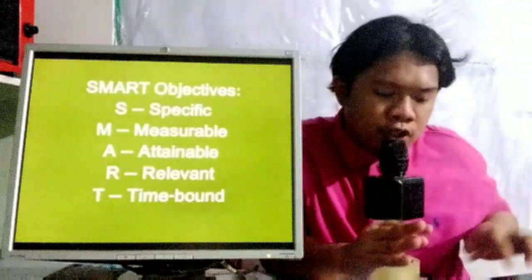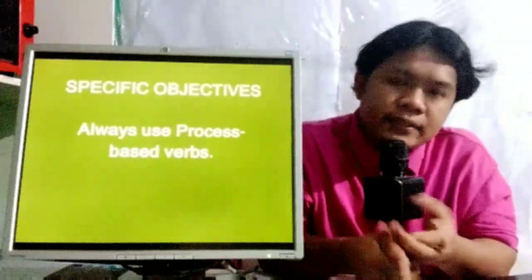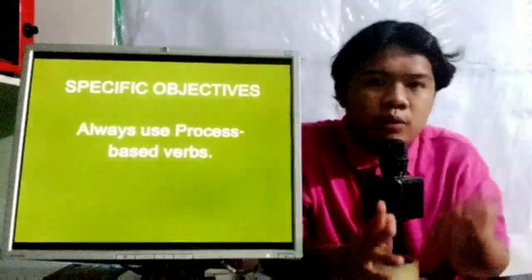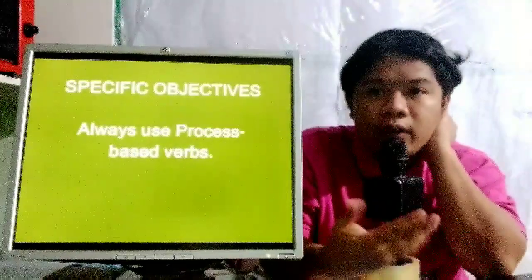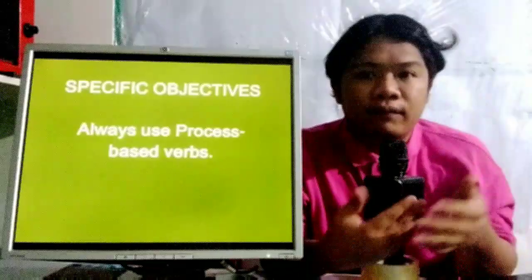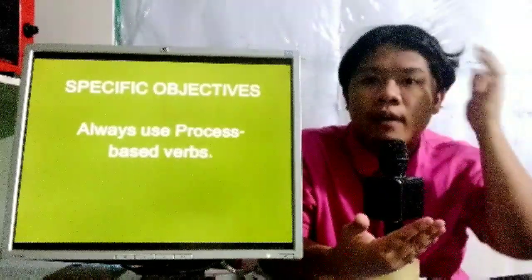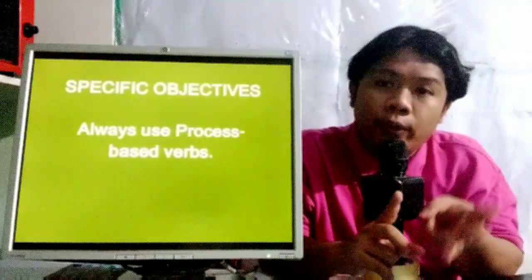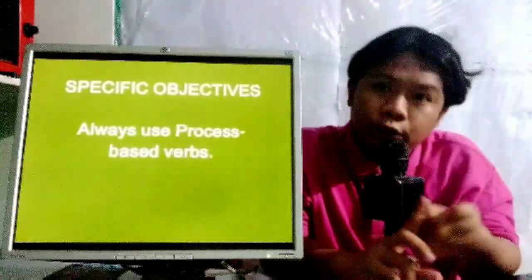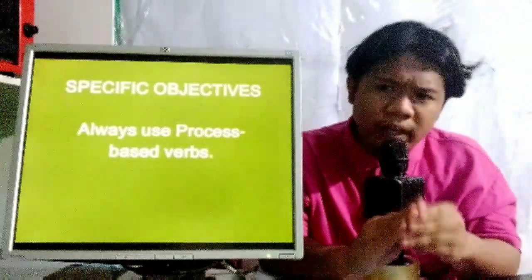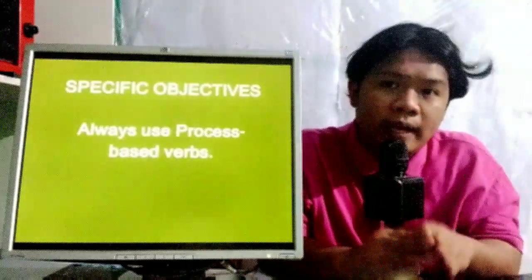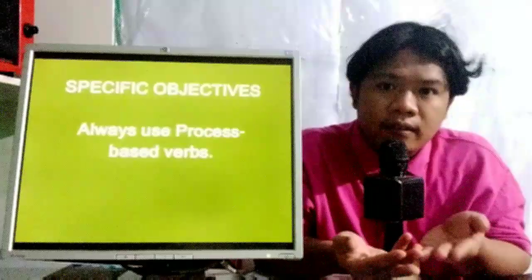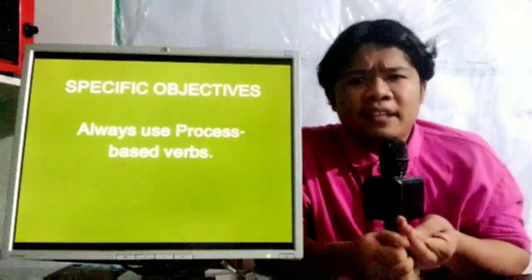Let's go to the particulars of each letter. For S — specific objectives — one tip is to always use process-based verbs. When using process-based verbs, we use words or activities — the verbs we plan to take into action when conducting the research. For example: do you want to propose something, conduct something, analyze, evaluate, or categorize? Ultimately, we need to use relevant and process-based verbs that are proven to exhibit themselves in the entirety of your research activity.